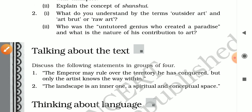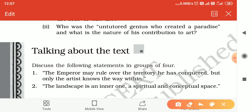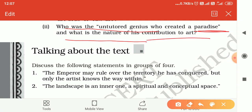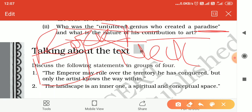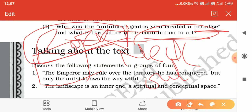The next question asks: who was the untutored genius who created a paradise? The untutored genius is none other than Nek Chand, who created the Rock Garden in Chandigarh using recycled and waste materials. His contribution to art is as an outstanding example of outsider art and raw art.